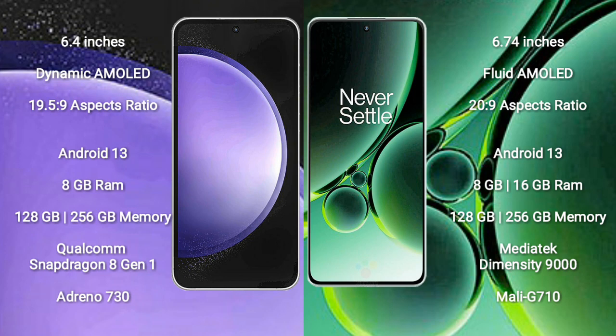Samsung Galaxy S23 FE runs on the Android 13 operating system. OnePlus Nord 3 also runs on the Android 13 operating system. Samsung Galaxy S23 FE comes with 8GB RAM and 128GB or 256GB internal storage.